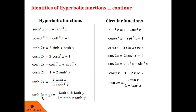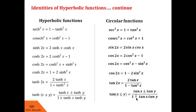Now for the addition formula: tanh(x ± y) equals tanh x ± tanh y upon 1 plus tanh x·tanh y. When you have a plus sign, you use plus throughout, and for a minus sign, minus throughout. This differs from circular functions where tan(x ± y) equals tan x ± tan y upon 1 minus/plus tan x·tan y — meaning for plus here you have minus there, and vice versa. I hope you understood the difference.